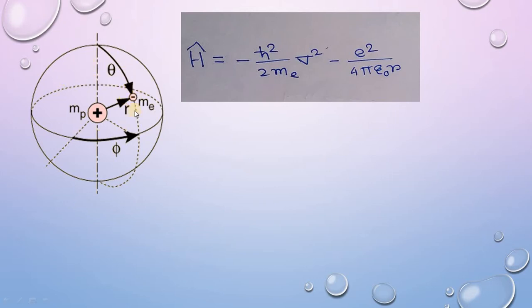This is the polar coordinates representation. It is always better to represent the hydrogen atom in polar coordinates because the potential energy depends on r, so we always prefer to use the wave function as well as the operator in terms of spherical polar coordinates, that is in terms of r, theta, and phi.